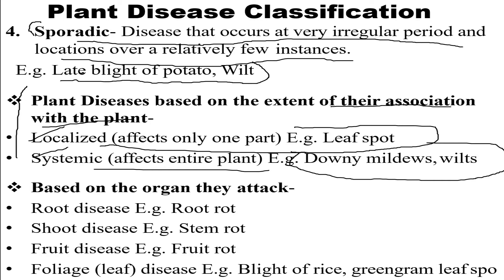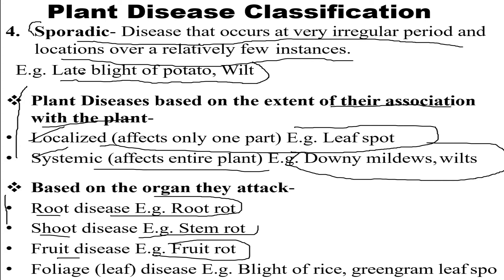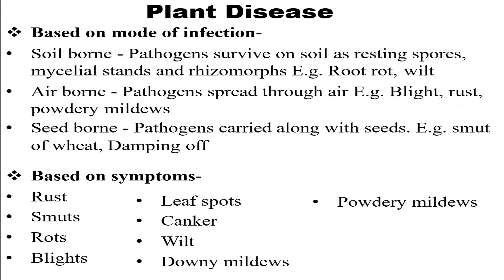Based on the organs they attack, there are many diseases as you can see on the screen — root, shoot, fruit, and foliage diseases. Root diseases commonly involve root rot, shoot diseases involve stem rot, fruit diseases affect the fruit directly, and foliage diseases affect the leaf, such as leaf blight of rice or green gram.